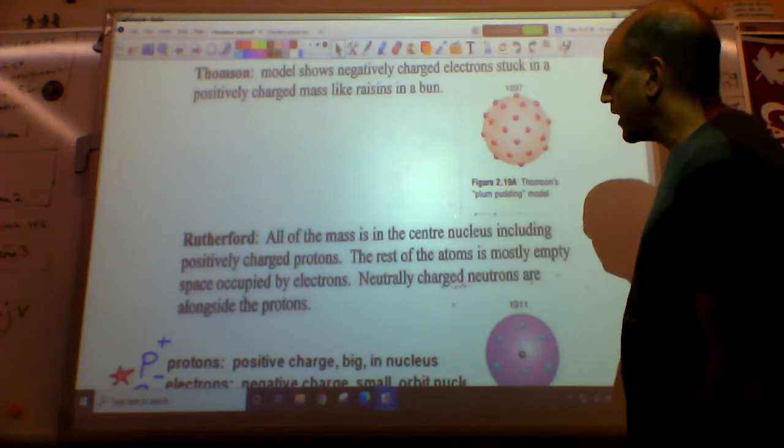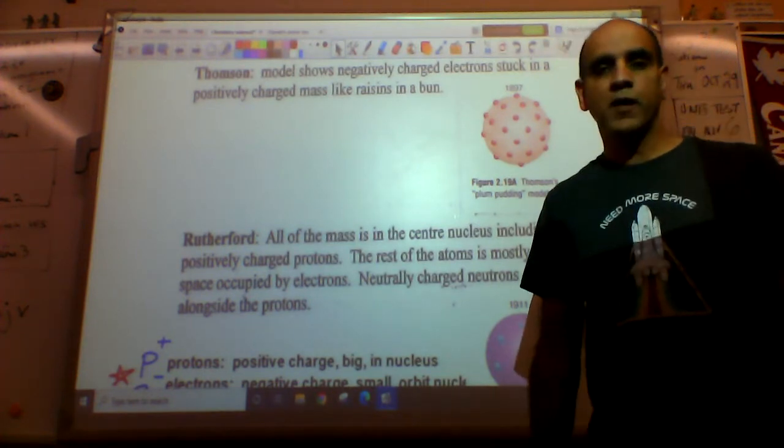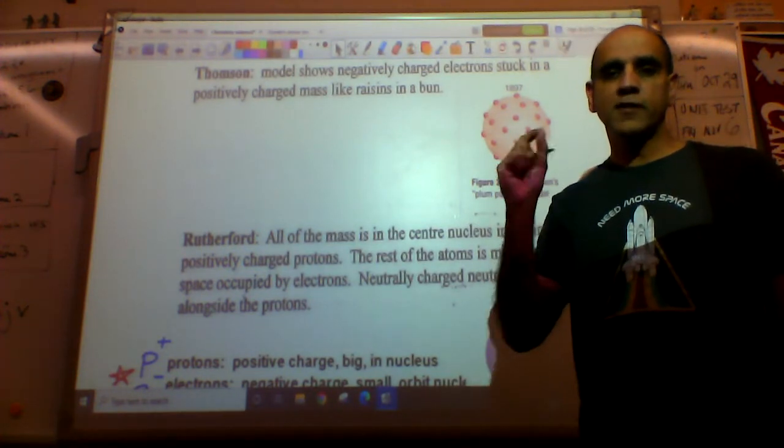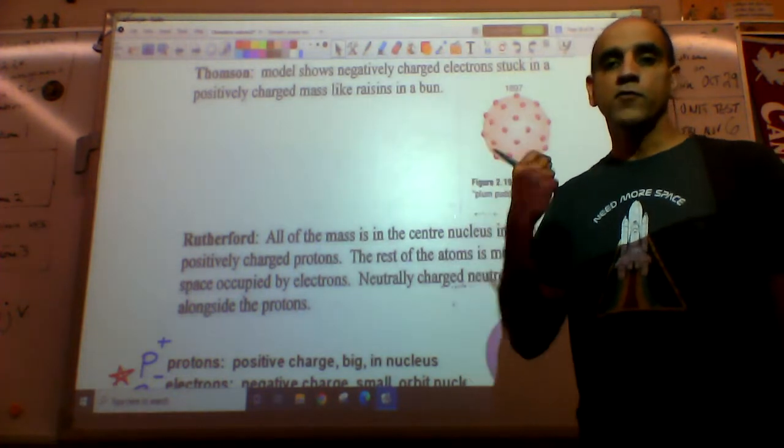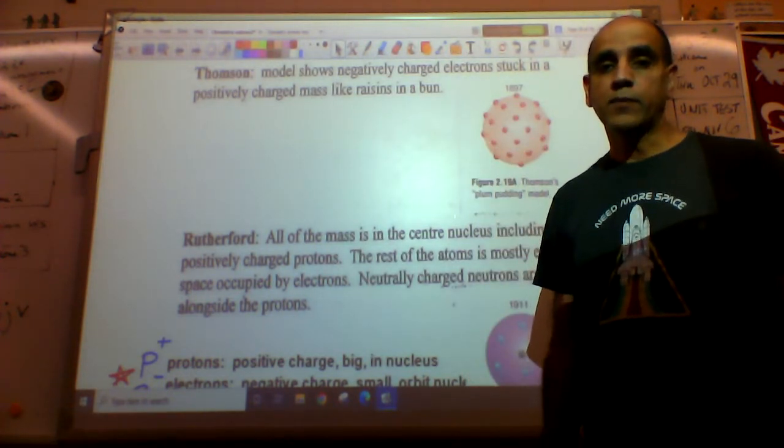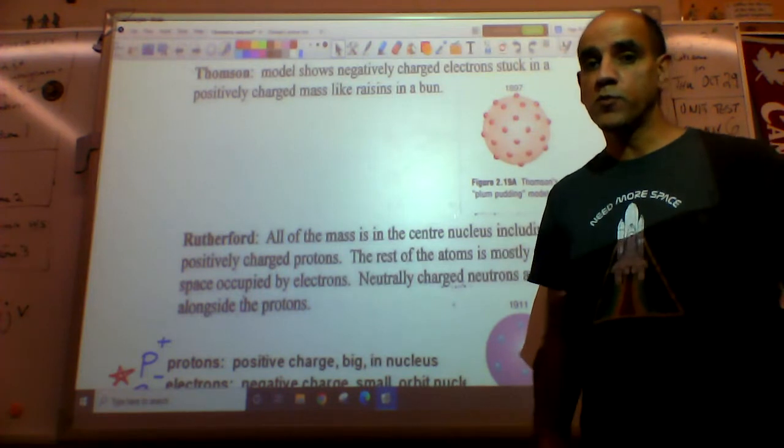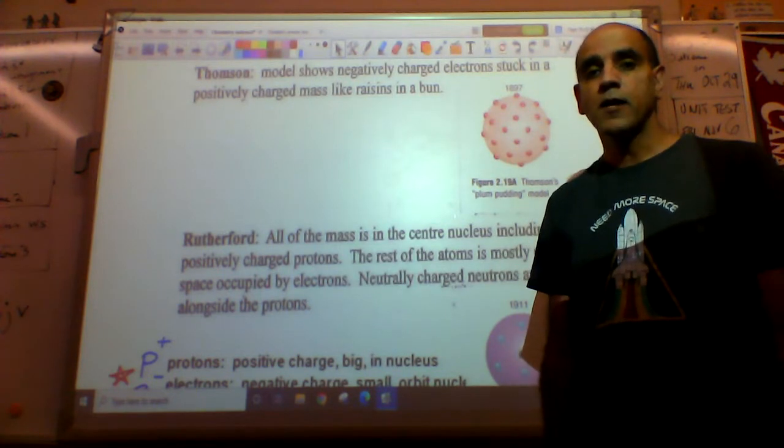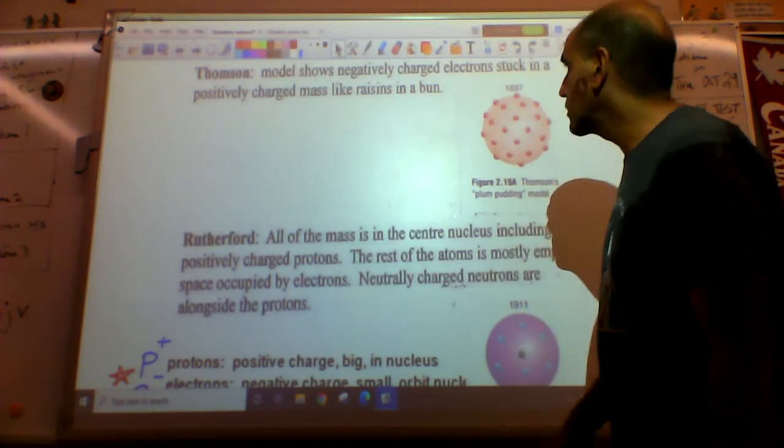Rutherford says all the mass is in the center. He does this cool experiment where he fires electrons at an atom and it bounces off the nucleus. And therefore he proved, but most of them just went straight through. So he proved that atoms are mostly empty space and that they have a dense nucleus.